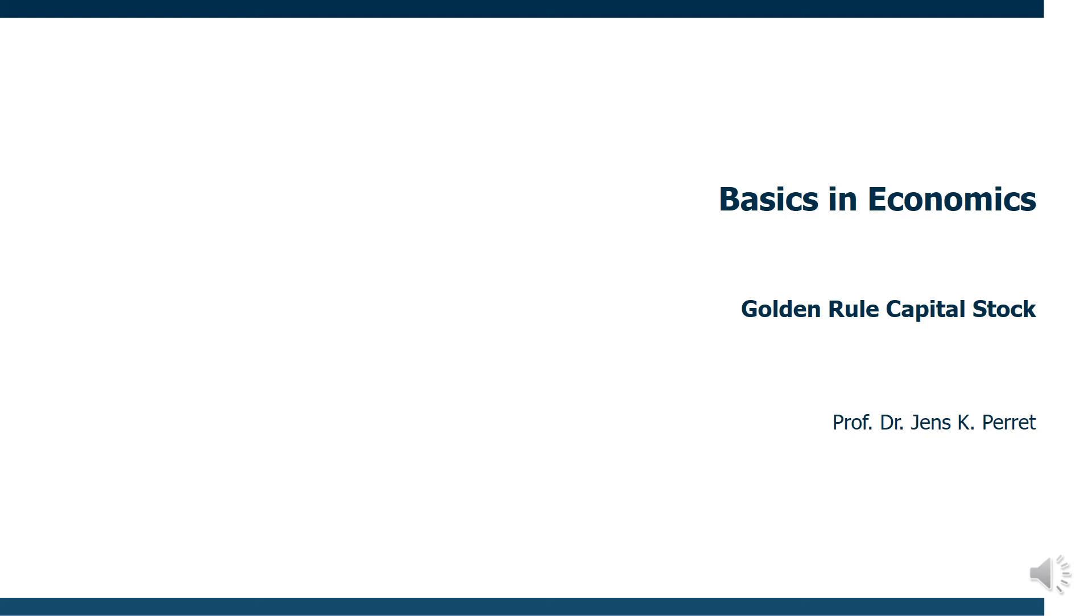Welcome to another unit in this course on economics. This time I'm going to talk about the so-called golden rule capital stock, which is the capital stock which in the context of the neoclassical growth model maximizes consumption per capita.